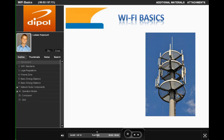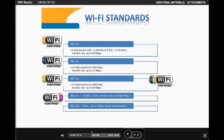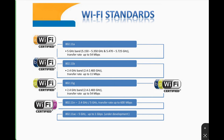Wi-Fi Basics. 802.11 is a group of standards for LAN Wi-Fi wireless networks, created and maintained by the Institute of Electrical and Electronics Engineers. The basic differences between individual standards are operating bands and maximum transfer rates. 802.11 B/G standards use the 2.4 GHz band, 802.11 A uses the 5 GHz band, and 802.11 N can be implemented in either the 2.4 GHz or 5 GHz band. Maximum transmission rates vary from 11 Mbps for 802.11 B to 600 Mbps for 802.11 N.